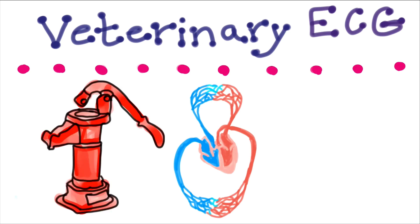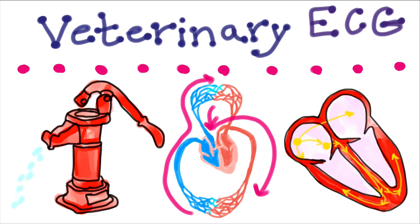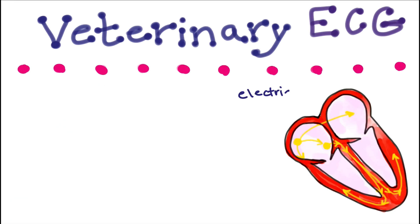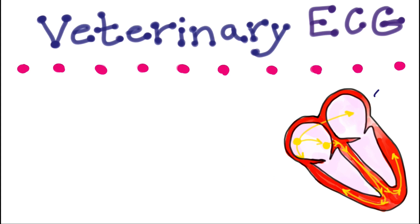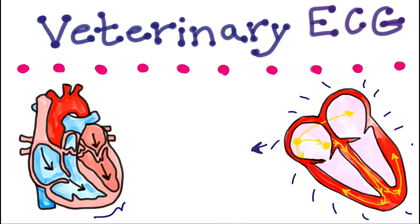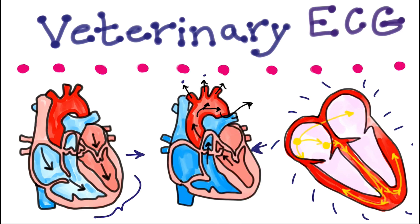The function of the heart is to act as a pump to circulate blood through the body. The heart can spontaneously contract because of electrical activity. This electrical activity causes first the top chambers, the atria, to push blood to the lower chambers. Then the lower chambers, the ventricles, squeeze to push the blood to the rest of the body.